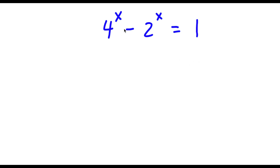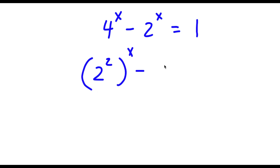So I have 4 to the power of x minus 2 to the power of x is equal to 1. I'm going to rewrite 4 as 2 to the power of 2, so I have 2 to the power of 2 to the power of x minus 2 to the power of x is equal to 1.